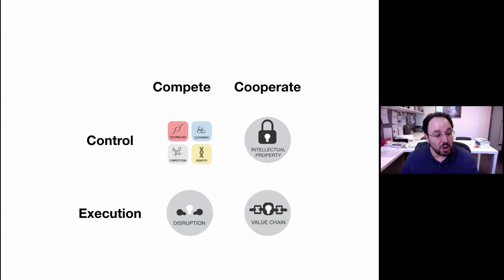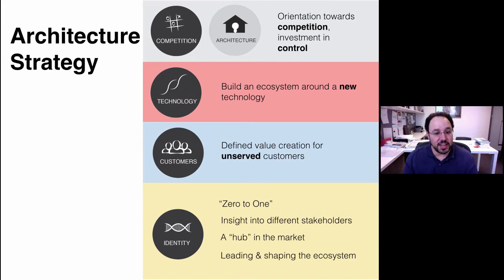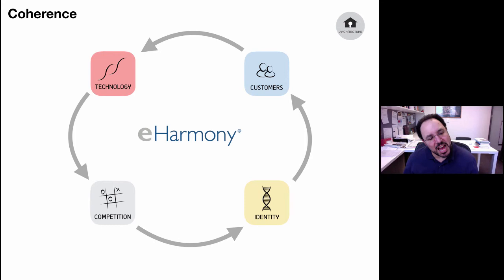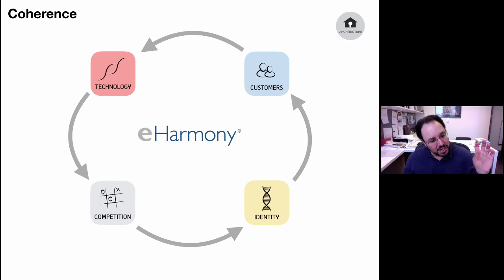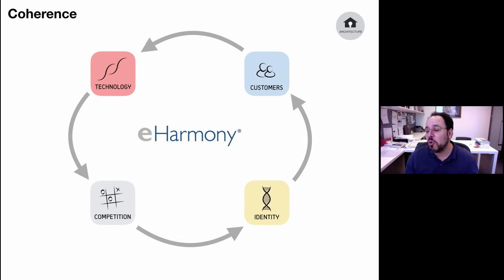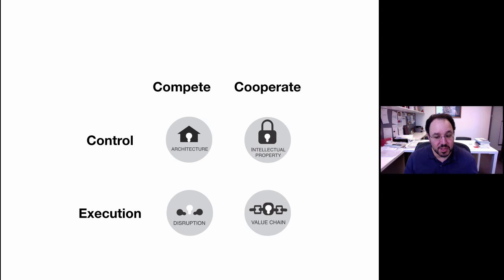The final box — the architecture strategy — is the hardest to think about. It involves competition and investment in control. You build an ecosystem around a new technology, defining value creation for underserved customers — like the 'zero to one' that Peter Thiel talks about, creating some sort of hub in the market. A good example is eHarmony. Competing in online dating, eHarmony pursued a different strategy from Match.com — it chose customers interested in long-term relationships, with technology that emphasized people staying and lingering on the site giving lots of information, building up a network, with an identity oriented around long-term marriage and a more values-driven community.